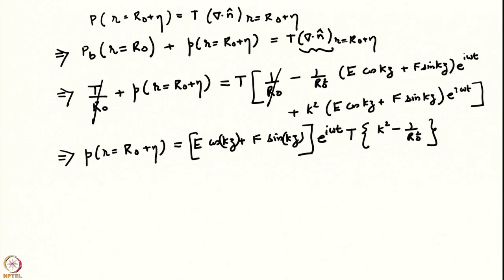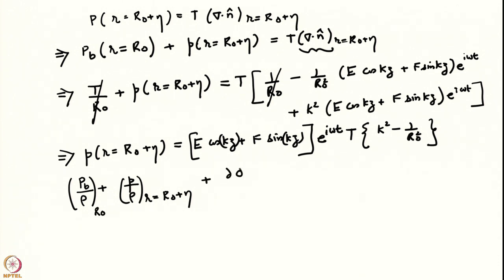Using that equation we can split the pressure into two parts. The term applied at r0 is anyway a constant — the first term is a constant — so I can skip writing r = r0, giving pb/ρ as the Bernoulli constant.